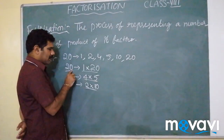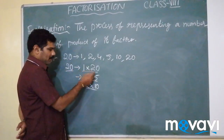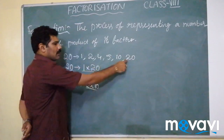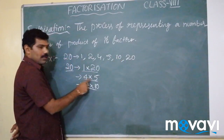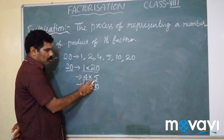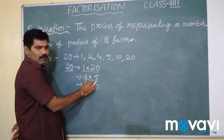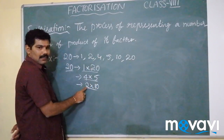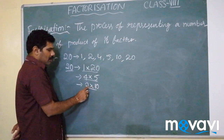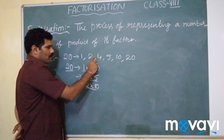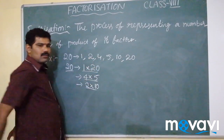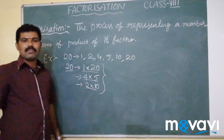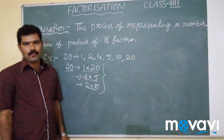So here 20 is represented as the product of 1 and 20, which are factors of 20; as 4 × 5, where 4 and 5 are both factors of 20; or as 2 × 10, where 2 and 10 are both factors of 20. This is called factorization.